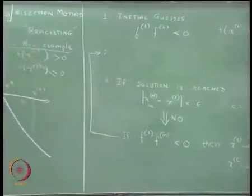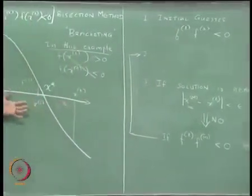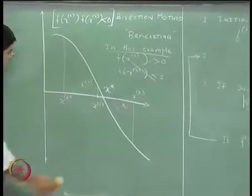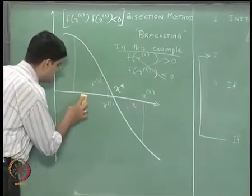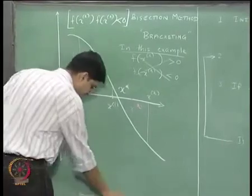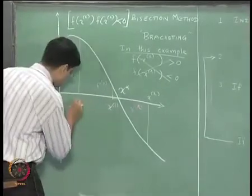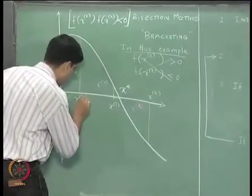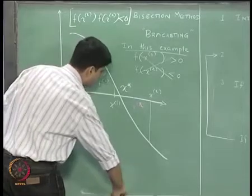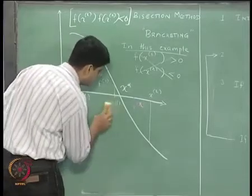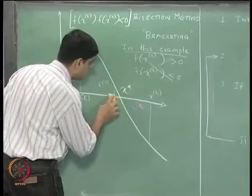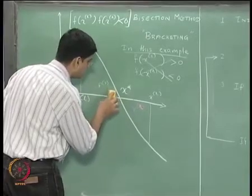Let us go back to the figure that we had previously drawn. We will again start with the same x_l and same x_r, and I will erase the points that we had generated using our bisection method.